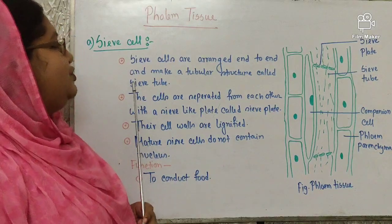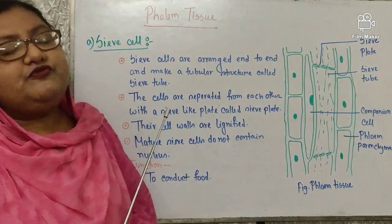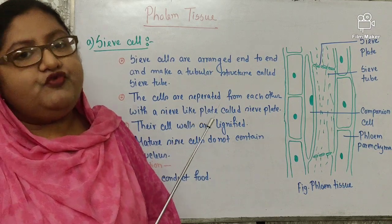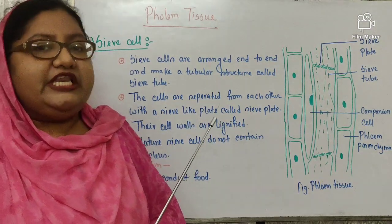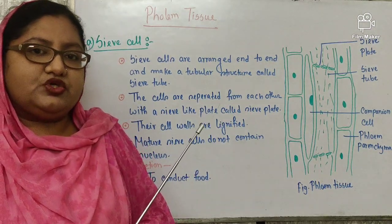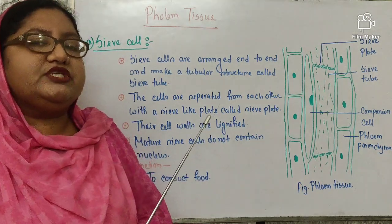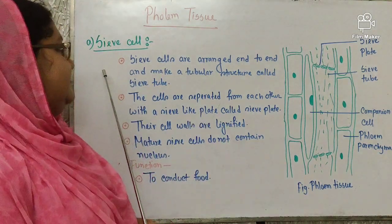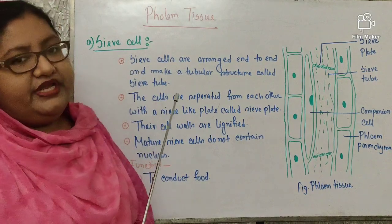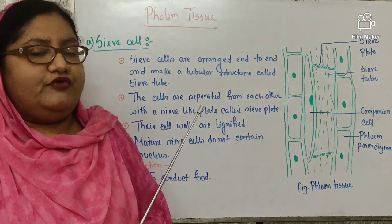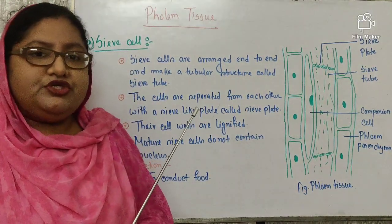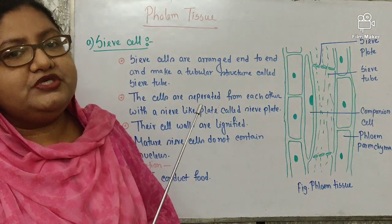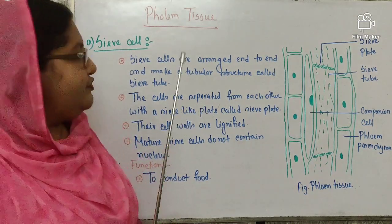Now, phloem tissue. The complex tissue that transports prepared food from leaves to different parts of a plant is called phloem tissue. Phloem tissue comprises four types of cells: sieve cell, companion cell, phloem parenchyma, and phloem fiber. That is why phloem tissue is a kind of complex tissue.